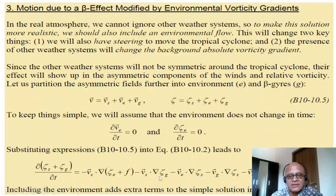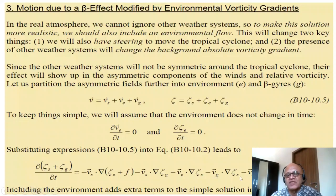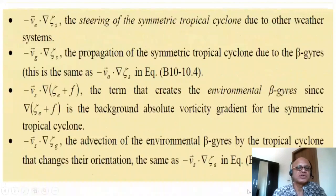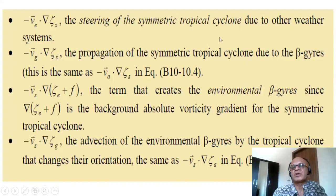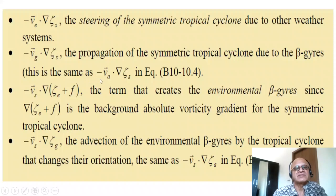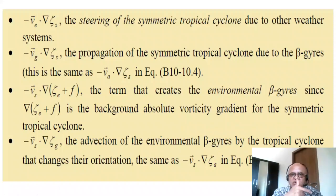Substituting into the vorticity conservation equation gives additional terms: minus V_s · grad(zeta_g) — advection of beta gyres — minus environmental advection of the symmetric cyclone, and minus beta gyre advection of the symmetric cyclone. The term minus V_e · grad(zeta_s) is the steering of the symmetric tropical cyclone due to other weather systems. Minus V_g · grad(zeta_s) is propagation due to beta gyres — redefined here because asymmetry now comes from both the environment and the beta gyres.